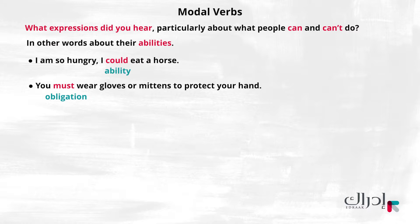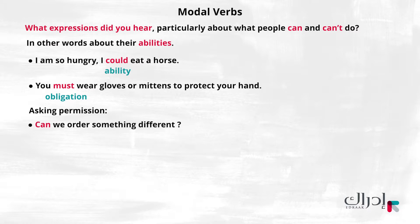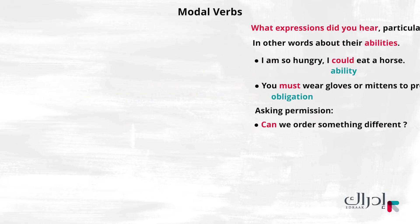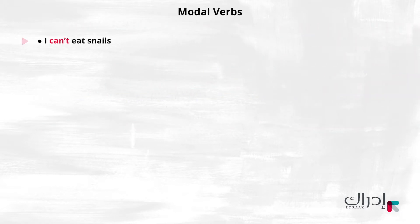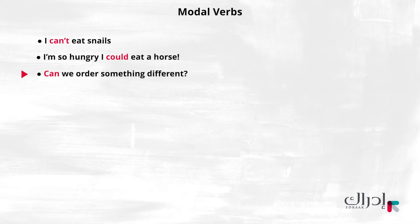I think there was one more expression which I like the most. That's right, asking permission. Can we order something different? Let's have a look at some examples again: I can't eat snails. I'm so hungry I could eat a horse. Can we order something different? We must try the sushi. What do you notice about the underlined words?